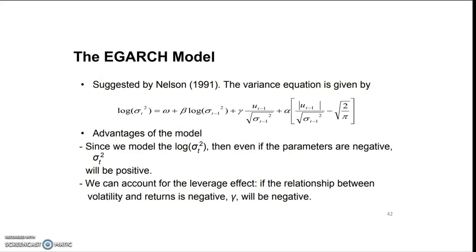The EGARCH model was developed by Nelson in 1991. The variance equation is given by log σ²t = ω + β log σ²t₋₁ and so on. There are certain advantages of this model.